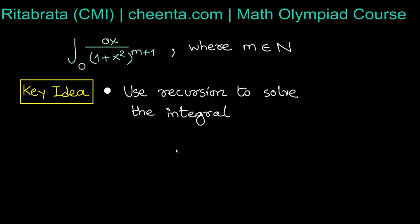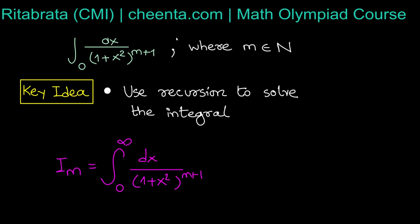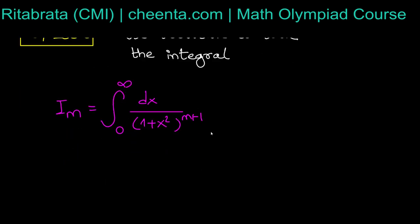We will define this to be I_M. So I_M equals the integral from 0 to infinity of dx divided by (1+x²)^(m+1). Now we need to make it a recursion — we need to relate I_M to I_(M-1) or I_(M-2) and so on.